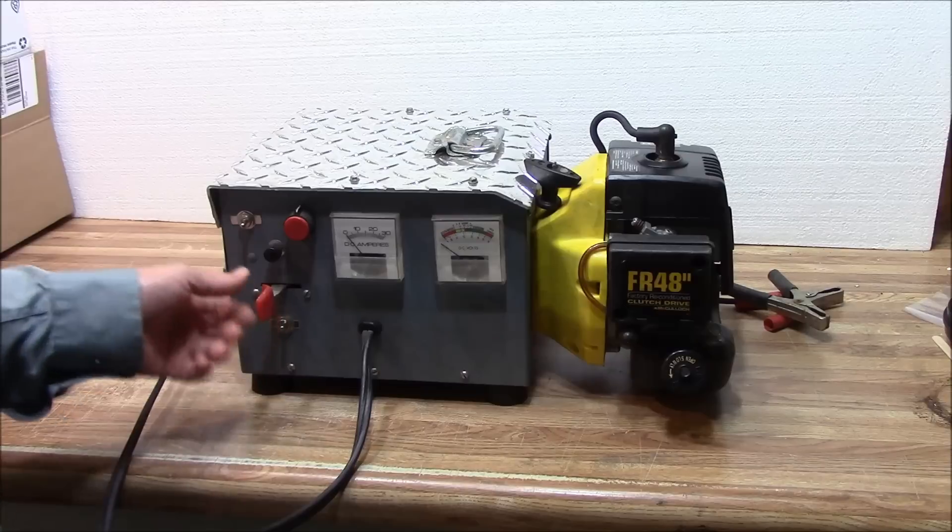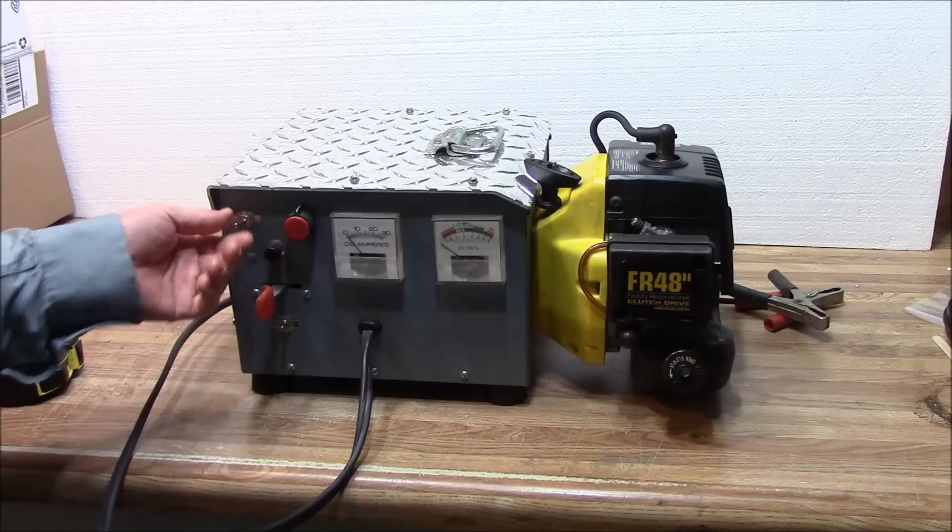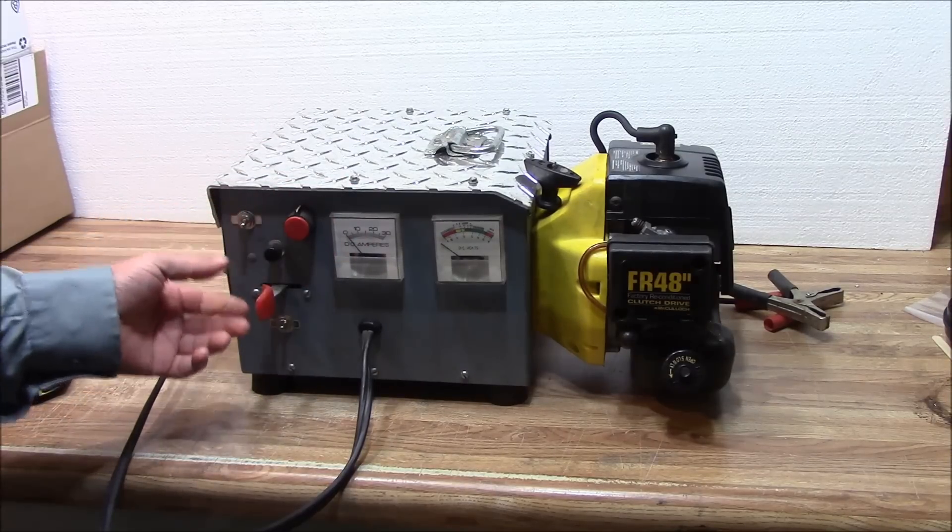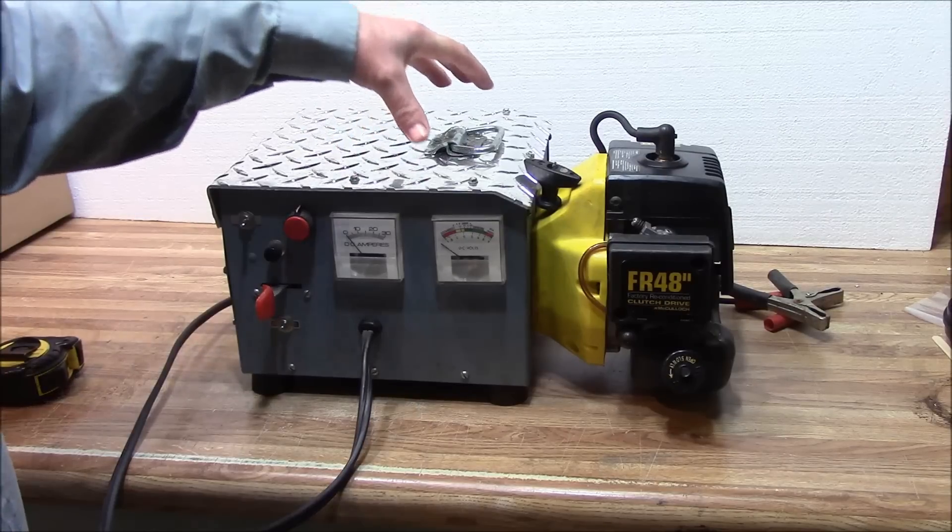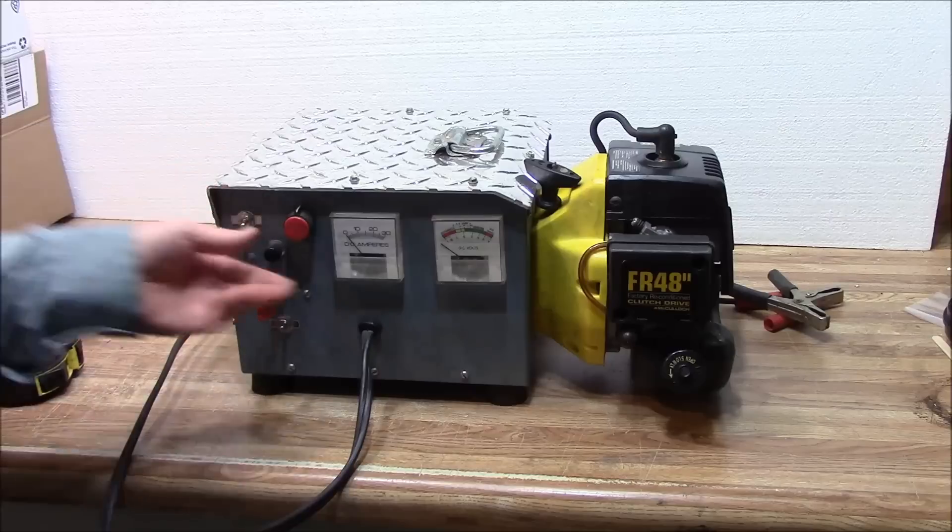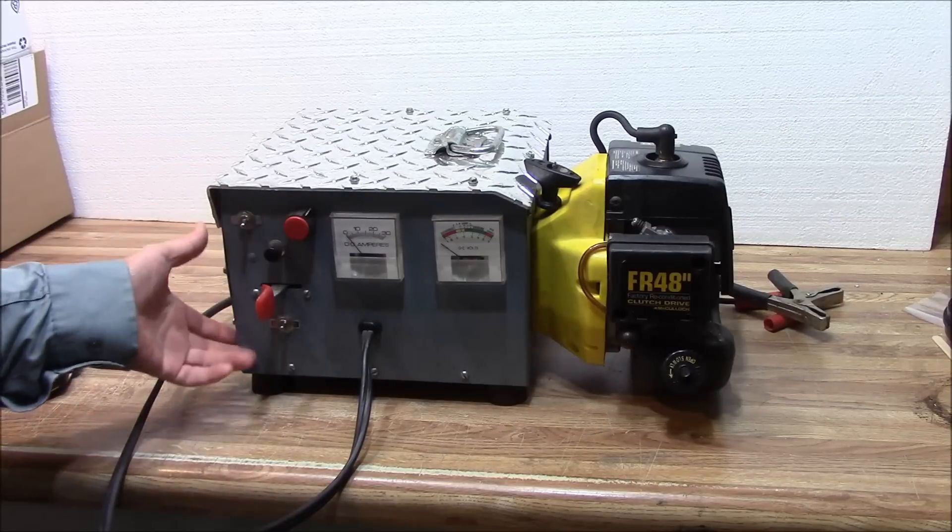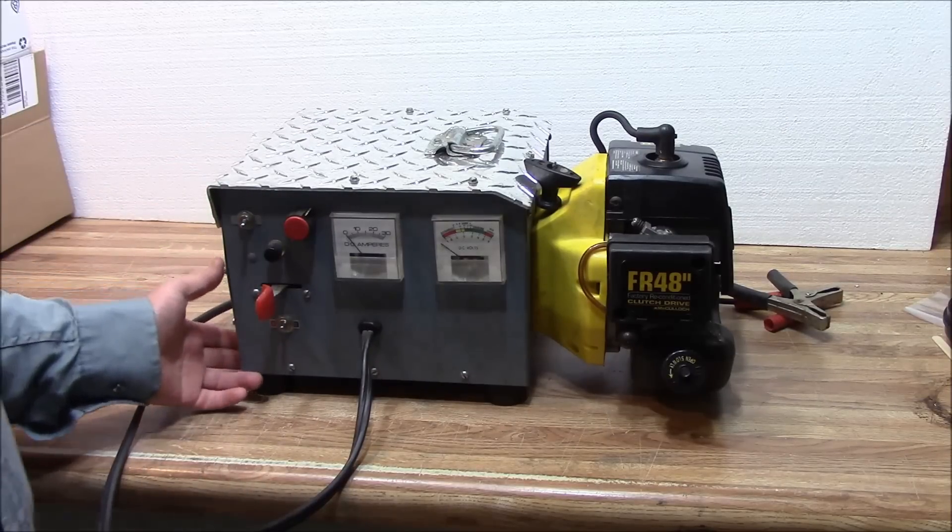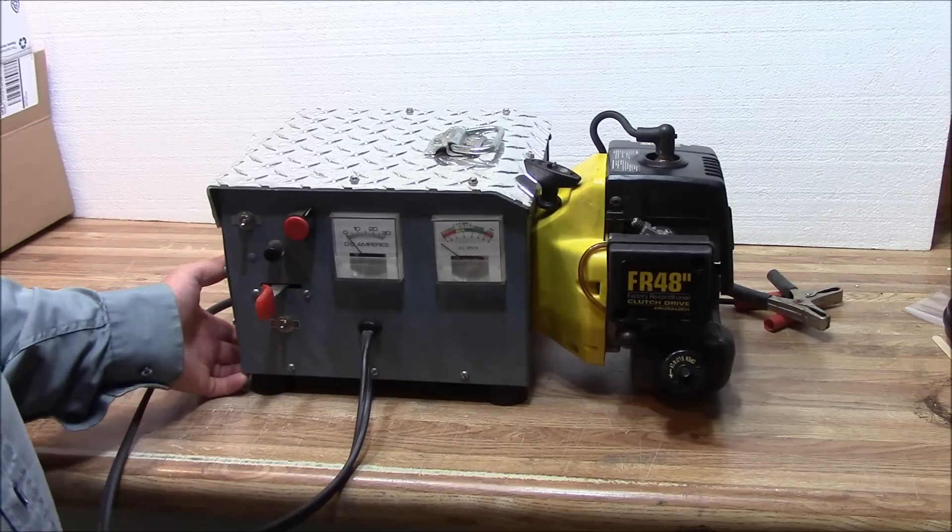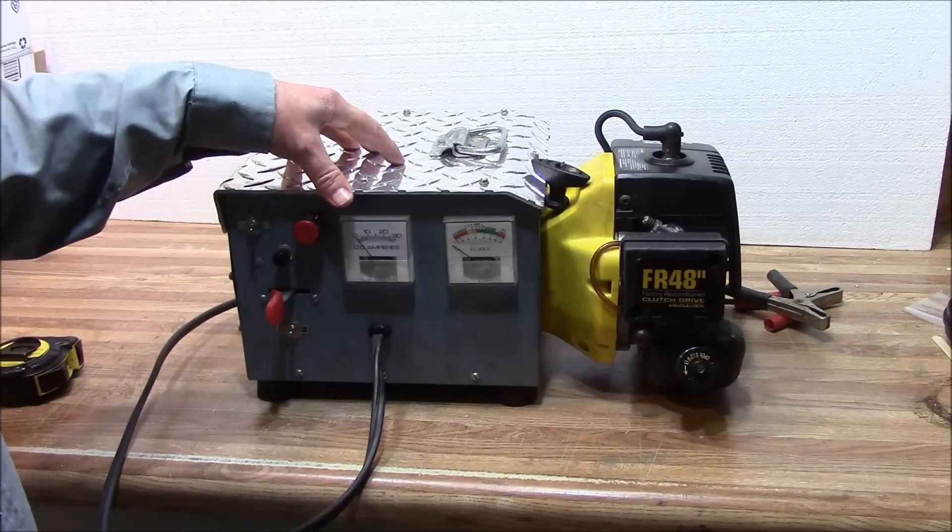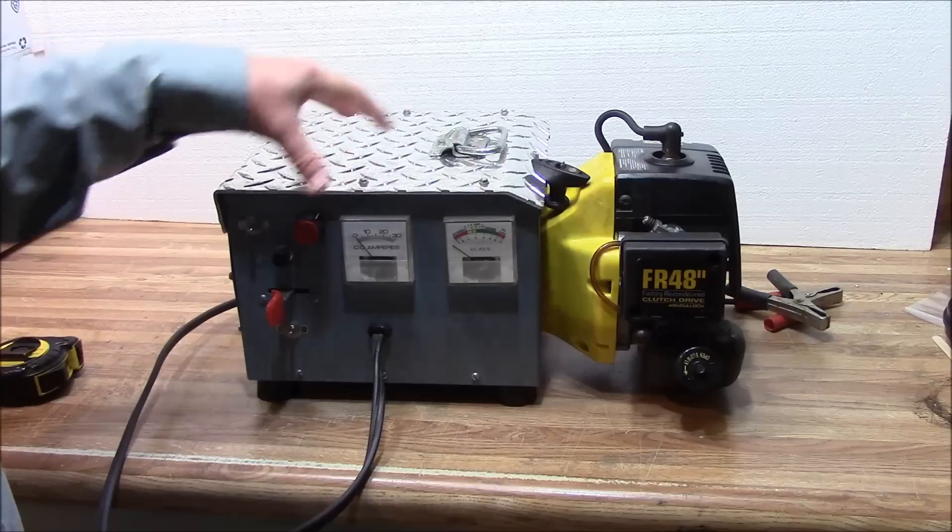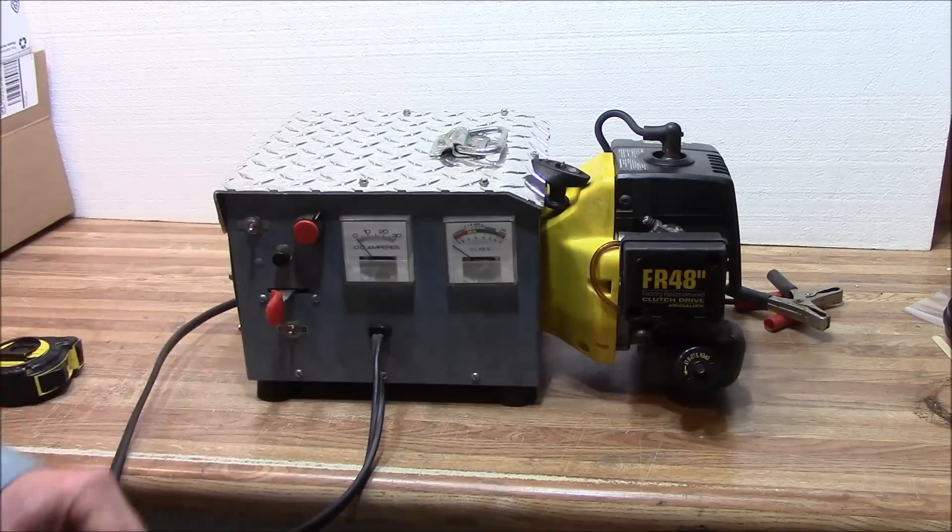This is the string trimmer generator setup which runs an automotive type alternator in here, a pulley system setup, and the wiring that shows how this works. I'm going to do a second video on this to show the inside of it. Look for the second video on this little string trimmer to see what the inside looks like. Thank you.